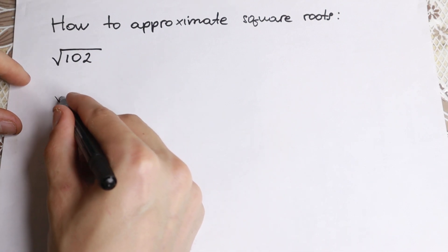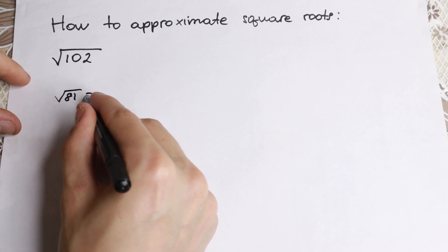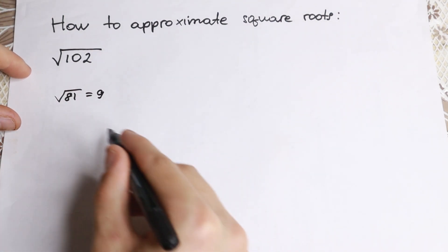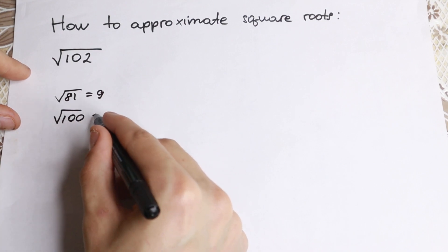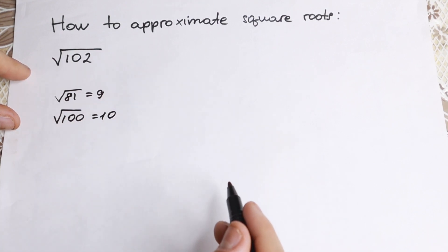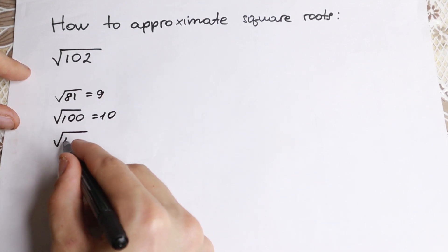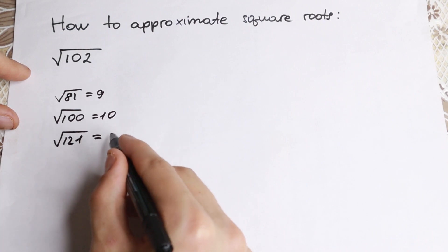For example we know that square root of 81 equals 9. We know this. This is a table case. And for example, square root of 100 equals 10. The next one we know, I hope you know that square root of 121. We know that this will be equal to 11.